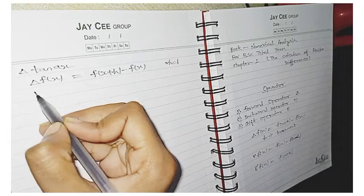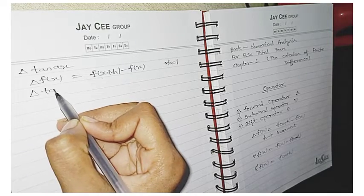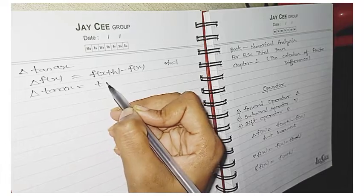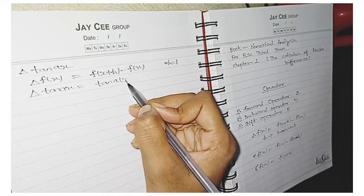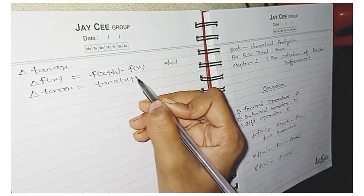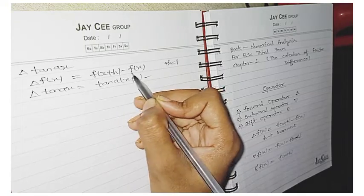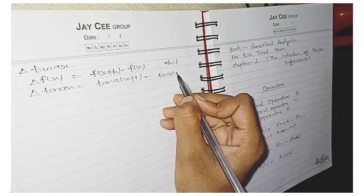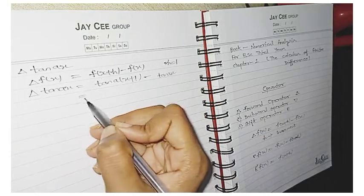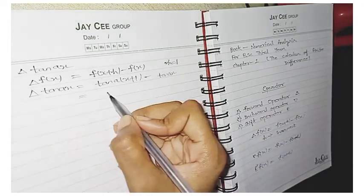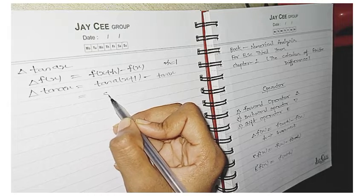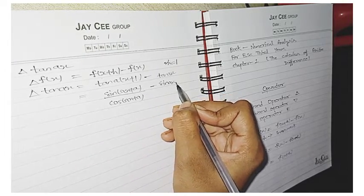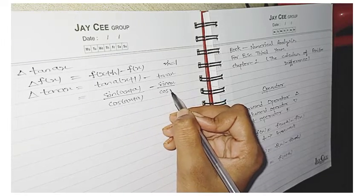So in this formula, we put it. So here we have delta tan ax is equals to. We need to increment a and then x plus h. We take 1 here. Then we subtract tan ax. So now we have to solve our according. Then the formula of tan is sin upon cos. Then minus sin ax upon cos ax. You need to do cross multiplication.